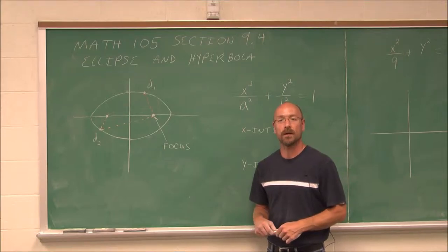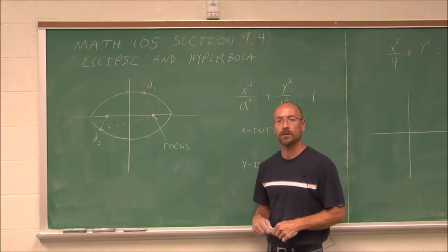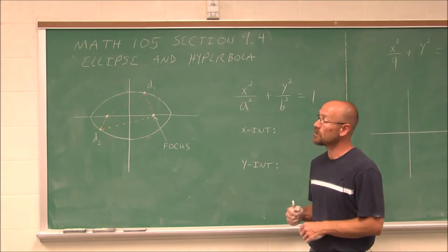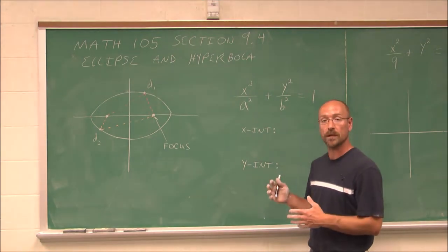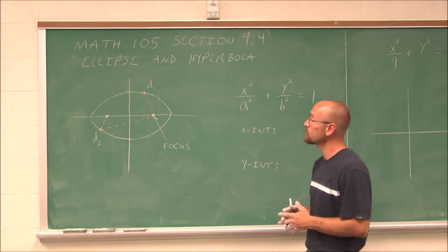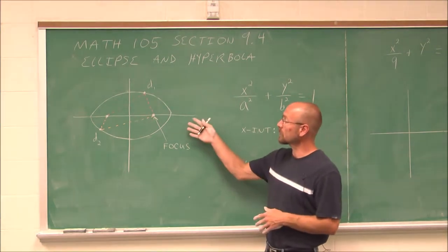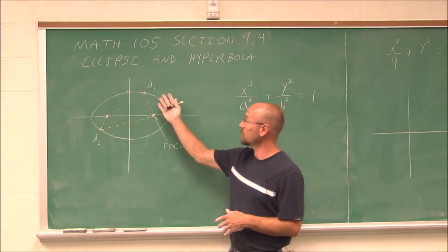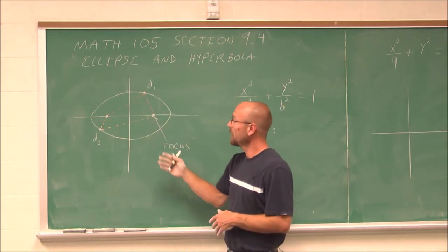Hello, and welcome to Bay College's video lectures for intermediate algebra. This is section 9.4. We're going to talk about the ellipse and the hyperbola. The first one we're going to look at is the ellipse. The ellipse is this oval shape.